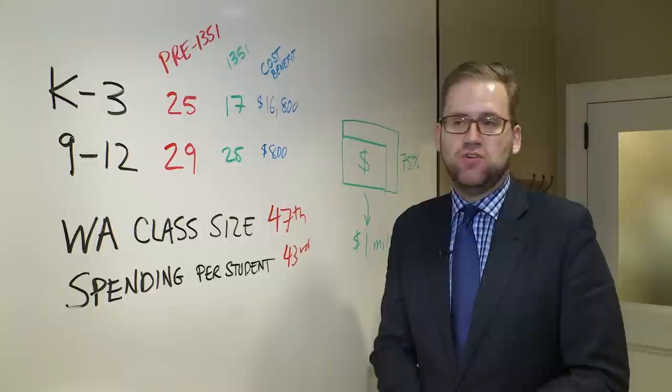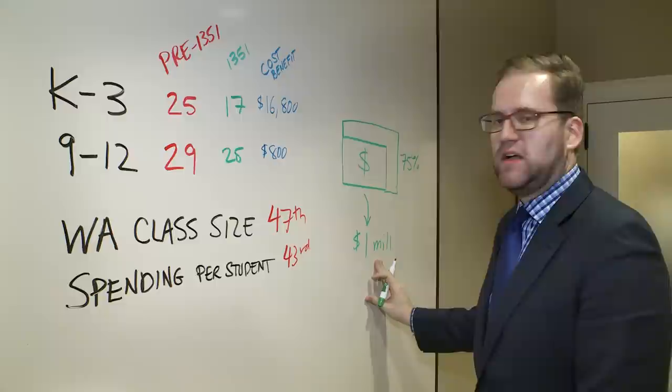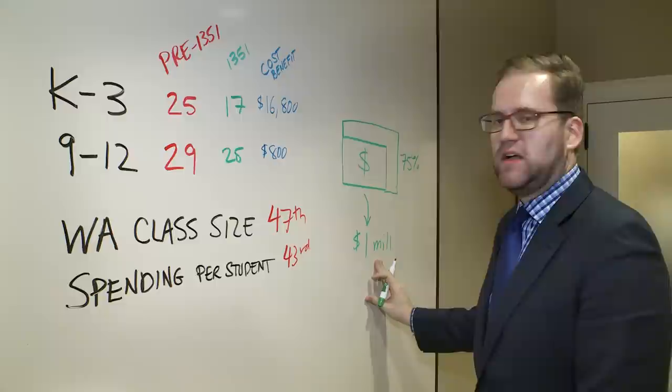So we're saving money at the classroom level, we're getting kids to graduation, and we're getting into college, delivering better value for our communities, and delivering a better education for our kids. This is today's Washington Whiteboard.